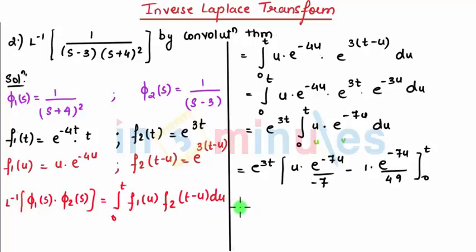Now I can put upper limit and lower limit which I get e raised to 3t put a curly bracket, now put t limit which changes to minus t by 7 e raised to minus 7t minus 1 by 49 e raised to minus 7t and minus the lower limit put 0, this first term becomes 0 and second term comes at minus 1 by 49 e raised to 0 becomes 1.